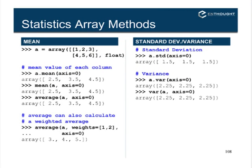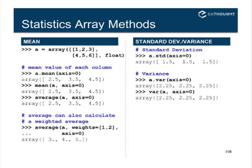There are also statistical methods available. The mean — a.mean — requires you to specify the axis if you want to compute along a specific axis. Calling a.mean with axis equals zero collapses the rows and gives results like 2.5, 3.5, 4.5. There's also a function called average that calculates the mean but has an extra argument: you can supply a set of weights to compute a weighted average. Standard deviation and variance are also available.